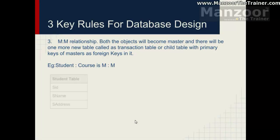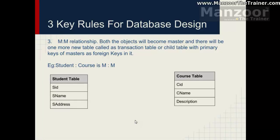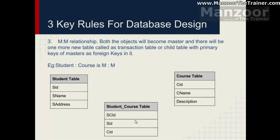So you will have a student table with student ID, student name, and address, and a course table with course ID, course name, and description. Both become master tables and they give birth to a new student-course transaction table, which has a student course ID as its primary key, and student ID and course ID acting as foreign keys from their respective master tables.